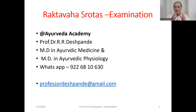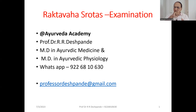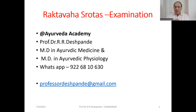In Ayurveda, there are different channels in our body by which different metabolic processes take place regarding the different body elements. There are 13 important srotasas: Prana vah srotas, Anna vah srotas, Udhaka vah srotas, and then 7 srotasas of the dhatu — the body tissues: Rasa vah srotas, Rakta vah srotas, up to Meda, Asthi, Majja, and Shukra vah srotas. And 3 srotasas of waste products: Mutra vah srotas, Purisha vah srotas, and Sveda vah srotas.